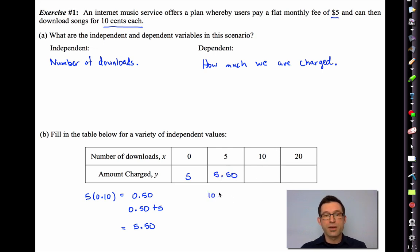We could do the same thing for 10 songs. We would have 10 songs times 10 cents. That just gives us $1. But then we'd have to have that $1 and add $5 to it to get $6. We would find the same for 20. That would be $7. Now, the reason I like doing something like letter B, even though it's relatively easy, is it's going to lead us to the formula for this function. And keep in mind, it really is a function. The definition of a function is that any given input gives us exactly one output.